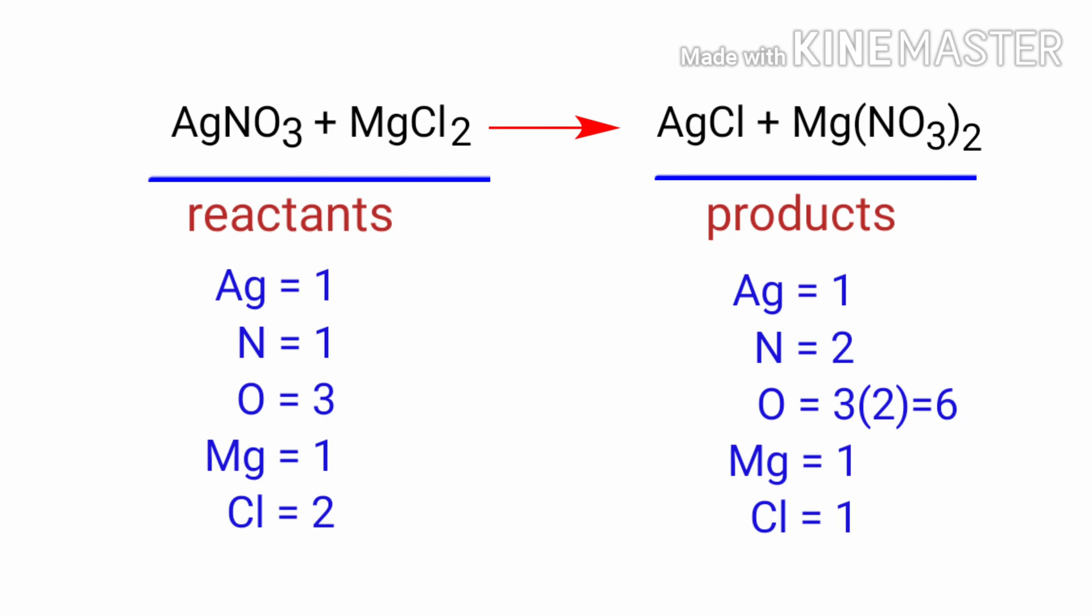In this equation, we need to balance our nitrogen atoms first. To do this, we need to put a coefficient of 2 in front of AgNO3.